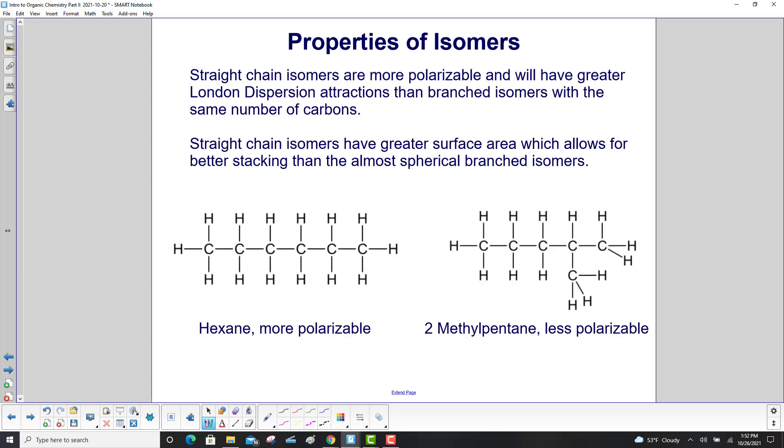Straight chain isomers are more polarizable and will have greater London dispersion attractions than the branched isomers with the same number of carbons. Straight chain isomers have a greater surface area which allows for better stacking than the almost spherical branched isomers.